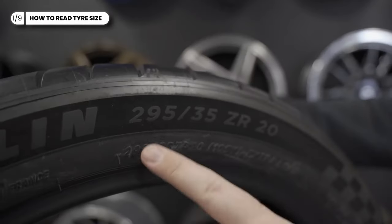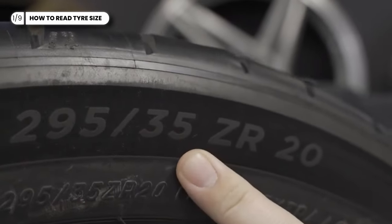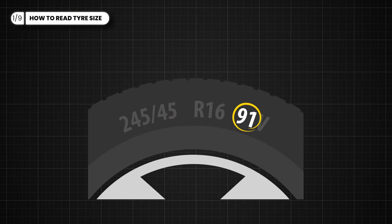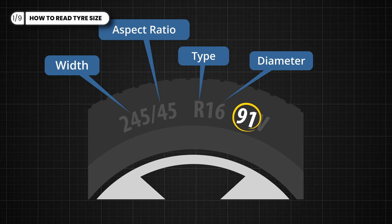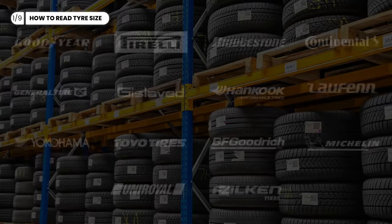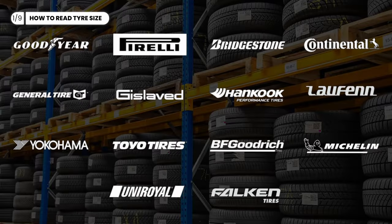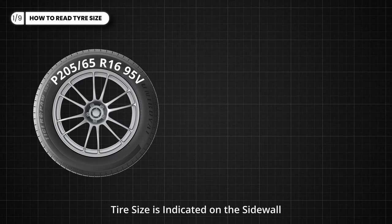Ever wonder what those numbers and letters on your tire sidewall mean? We'll break it down for you, explaining how to decipher tire width, aspect ratio, construction type, and rim diameter. Regardless of which manufacturer made the tire, its size is indicated on the tire sidewall. Let's take the tire above as an example.